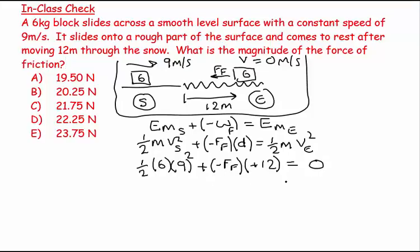So that means that rearranging, FF is equal to one-half times 6 times 9 squared all divided by 12, which equals basically 9 nines or 81. 12 into 6 goes 2 times another half, so that's going to be 81 over 4.